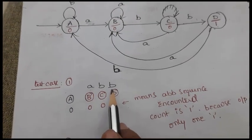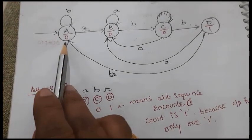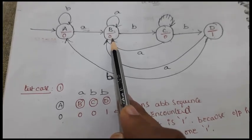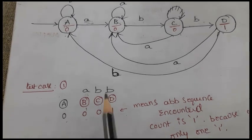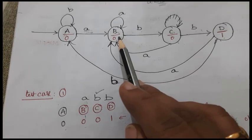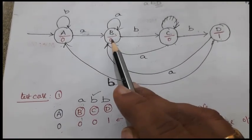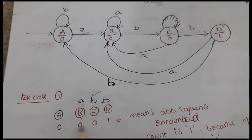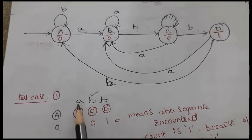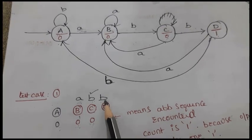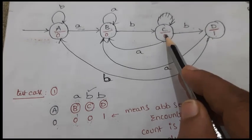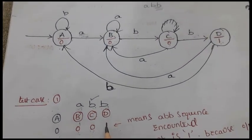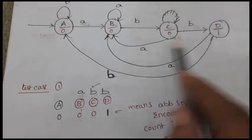Test case 1: input is 'abb'. Initially we are at state A with output 0. The first character is 'a', so it goes to state B with output 0. The next character is 'b', so from state B it moves to state C with output 0 — we still only have 'ab', not 'abb'. The third character is 'b'; from state C it moves to state D with output 1. The 'abb' sequence is complete, so we get output 1.